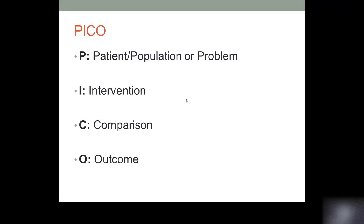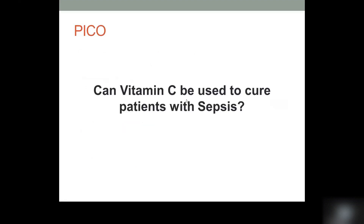The I is for intervention, which is the topic you are investigating such as a new drug or procedure. C is what you are comparing it to — please note there may not always be a comparison group depending on your topic. O is for outcome, which is what you are hoping to achieve, for example lower readmission rates.